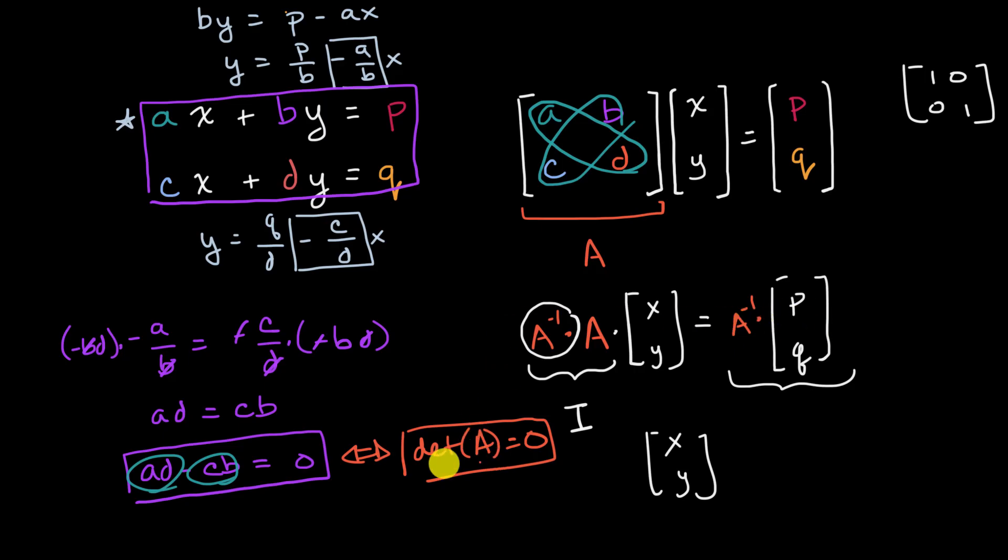you could just multiply it. So this is a situation where this is only going to be true, and I haven't proven it rigorously, but hopefully it gives you a little bit of a justification. This is a situation where A inverse doesn't exist.